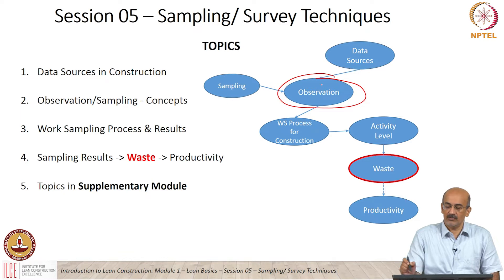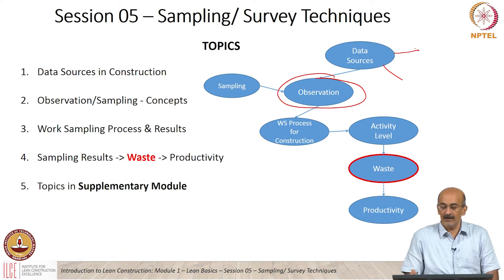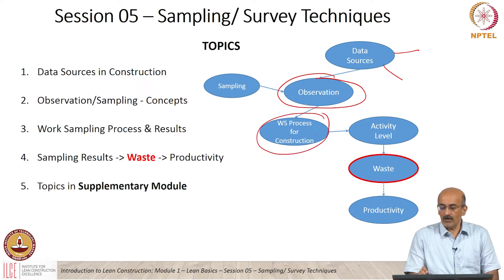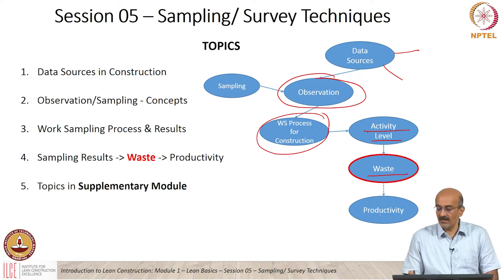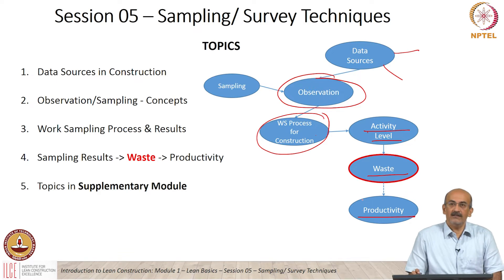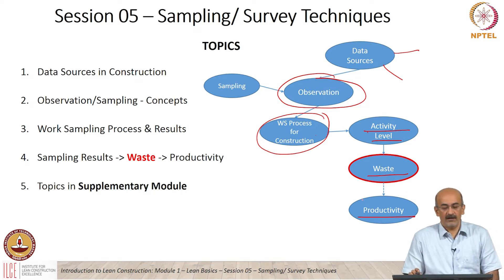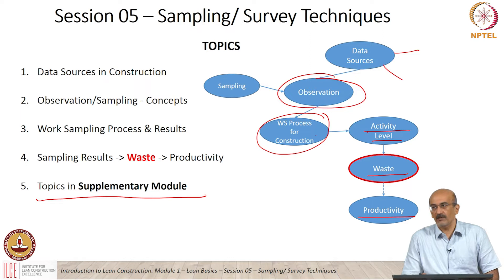The data sources — one of the key data sources is observation. There are other types of data sources which we will mention a little bit later. We look at the work sampling process for construction, which is that observation-based process. Work sampling basically looks at the activity levels on a site. Through these activity levels, what we try to do is assess the waste, which is a very important concept of lean construction. And ultimately, we look at whether waste leads to productivity. The amount of concepts covered here is only the very elementary part, with more details in the supplementary modules.